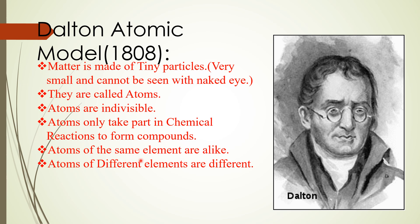Atoms of the same element are alike, and atoms of different elements are different. These are the assumptions made by John Dalton in the year 1808. He revealed that matter is made up of tiny particles that cannot be seen with our naked eye and are not further divisible. But later, several scientists did several experiments and proved that atoms are in fact divisible. Let us discuss those experiments in detail.